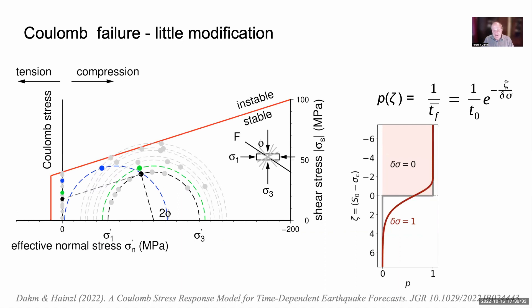Therefore, we have studied the theoretical background of seismicity models in general and introduce a small modification to the Coulomb failure model. Instead of assuming that a source is triggered instantaneously when the frictional strength is exceeded, we have introduced an average time-to-failure, Tf, that depends exponentially on the absolute Coulomb stress. This allows us to define the probability for a single source to be triggered.